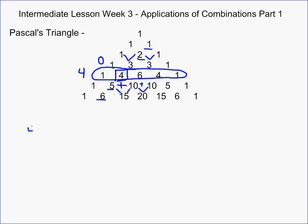We can show that if we look at 4 choose 2, that's just 4 times 3 over 2 times 1, which gives you 12 over 2, which is 6. And so on Pascal's Triangle, the 6 matches up with the fourth row, entry 2.